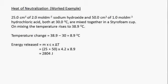The first thing we need to do is find the temperature change for the reaction mixture. The final temperature was 38.9 degrees Celsius and the initial temperature was 30 degrees Celsius, so the temperature change is 38.9 minus 30, which gives 8.9 degrees Celsius. The next step is to find the energy released in the reaction, and you need to familiarize yourself with this formula.